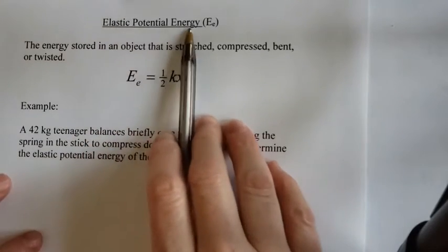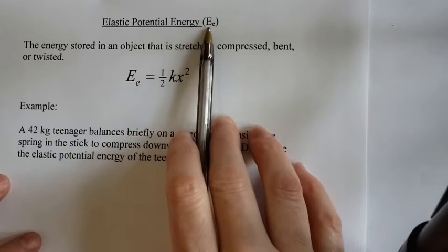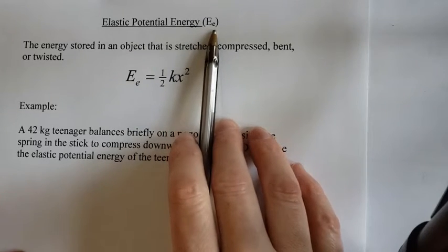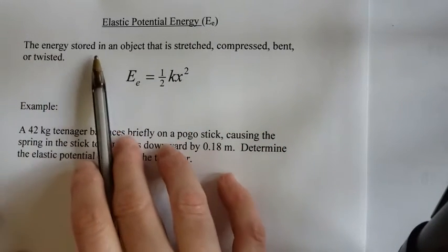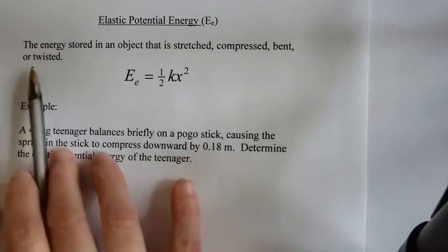So elastic potential energy, we use little e for the word elastic, so it's capital E for energy, little e for elastic. It's the energy stored in an object that has stretched, compressed, bent, or twisted.